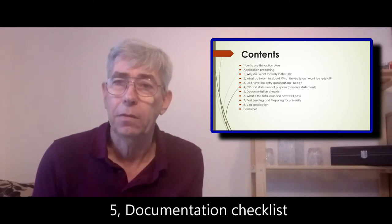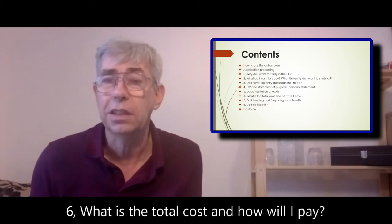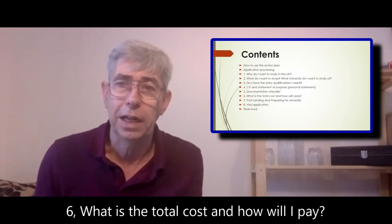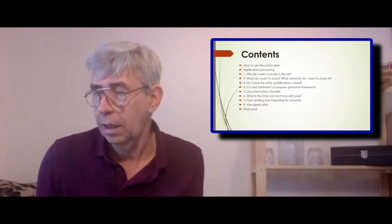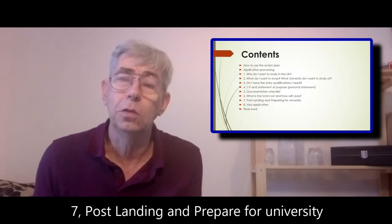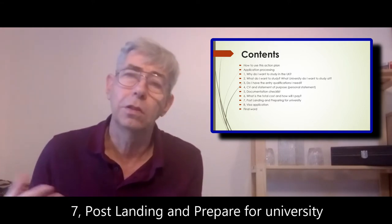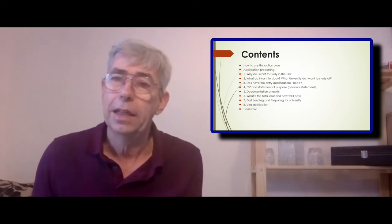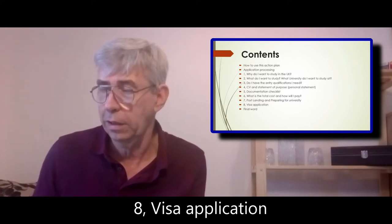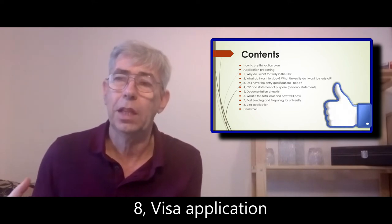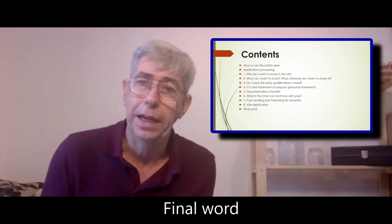Number five is the document checklist — making sure you have all the documents that you need for coming to study in the UK. Number six is what is it going to cost — what's the total cost of studying in the UK. Obviously that's something very important because you've got to work out your finances. Then there's post-landing preparation — preparing to study in the UK, knowing all the things you need to know about the UK when you get here, how you're going to deal with food, cooking, washing, all that kind of stuff. Last but very important is your visa application — what you need for your visa application and what you need to do for it. And then there's a final word which just looks back on what you've done.